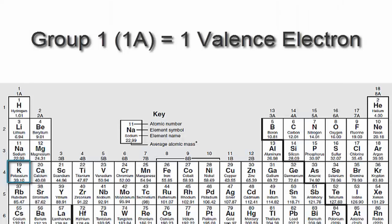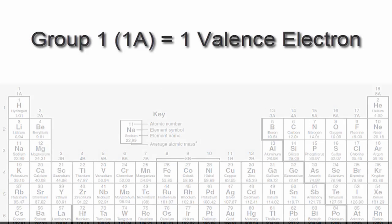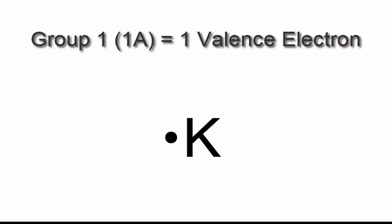Potassium is in group 1 or 1A, so it has one valence electron. We'll take and put that one valence electron right next to K, the element symbol for potassium.